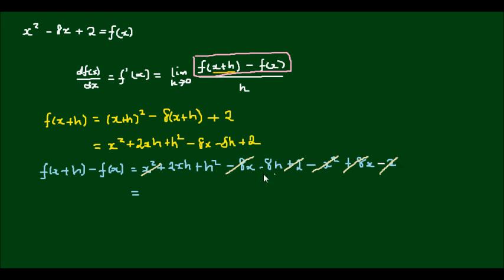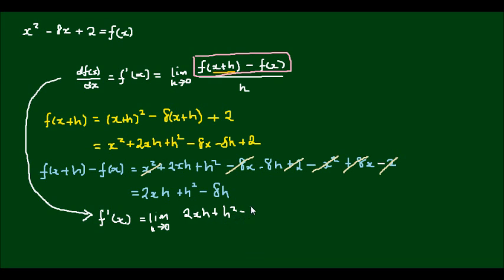And we're going to be left with 2xh plus h squared minus 8h. So our derivative evaluates now to the limit as h approaches 0 of (2xh + h squared - 8h) divided by h.